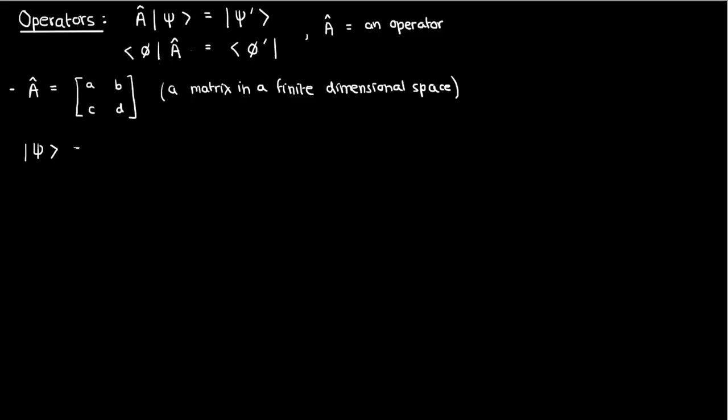In addition, as mentioned earlier, a ket can be represented by a column vector, while a bra is like a row vector. Because of this, you can probably see why operating on a ket has to be done from the left, while operating on a bra has to be done from the right, because otherwise matrix multiplication wouldn't be valid.